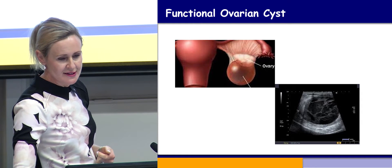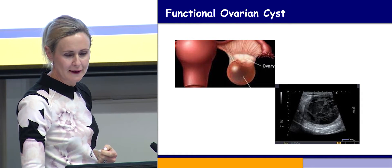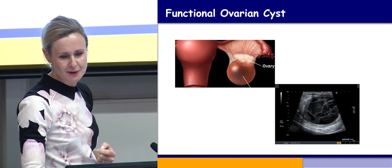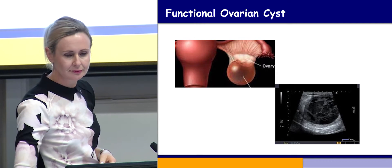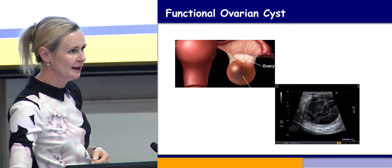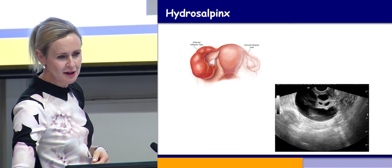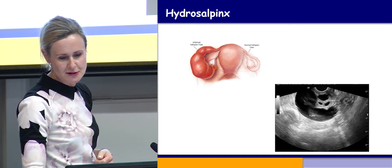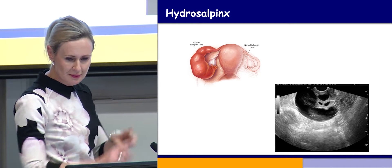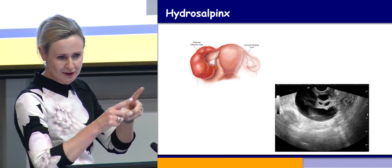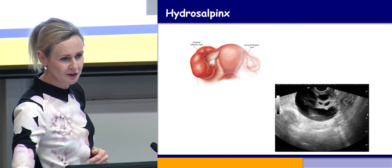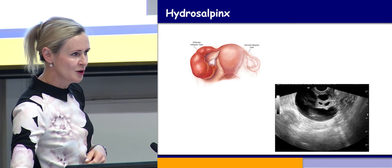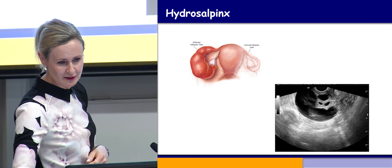This is a functional ovarian cyst — a normal finding in a reproductive-aged woman. The imaging shows some haemorrhage within the cyst. These are very common and nothing needs to be done about them. This is a hydrosalpinx, which is also quite common. The typical ultrasound appearance almost looks like a caterpillar with little waists along it, very characteristic. It's caused from a collection of fluid within a fallopian tube, most commonly from an STI.